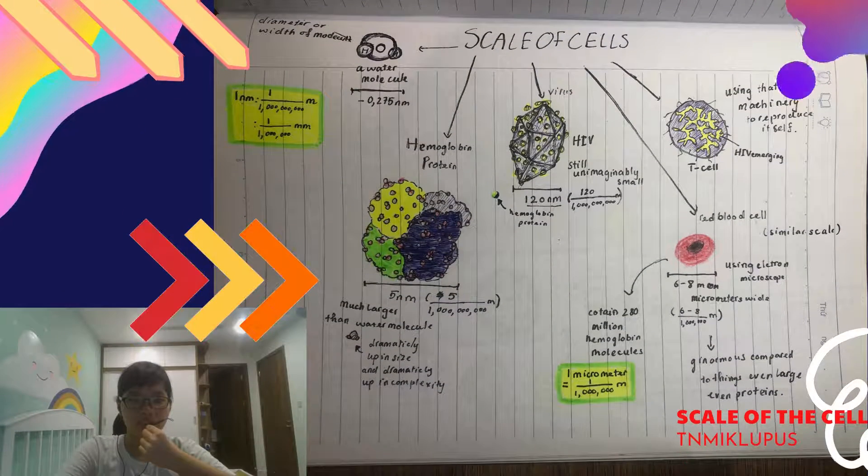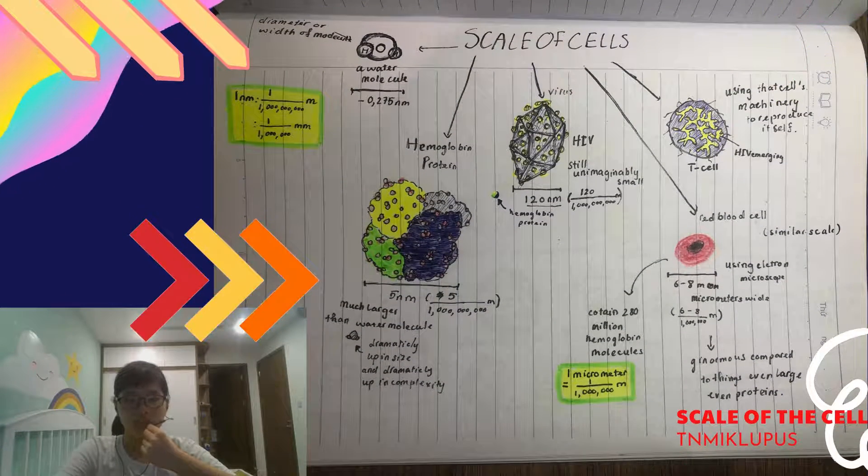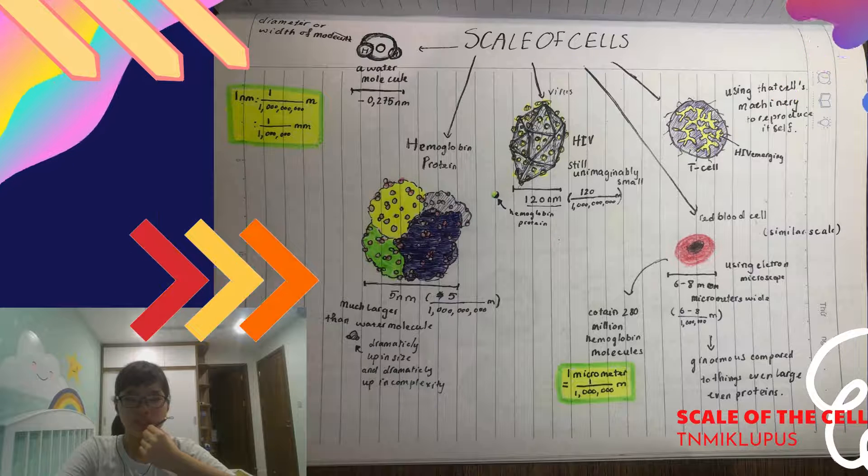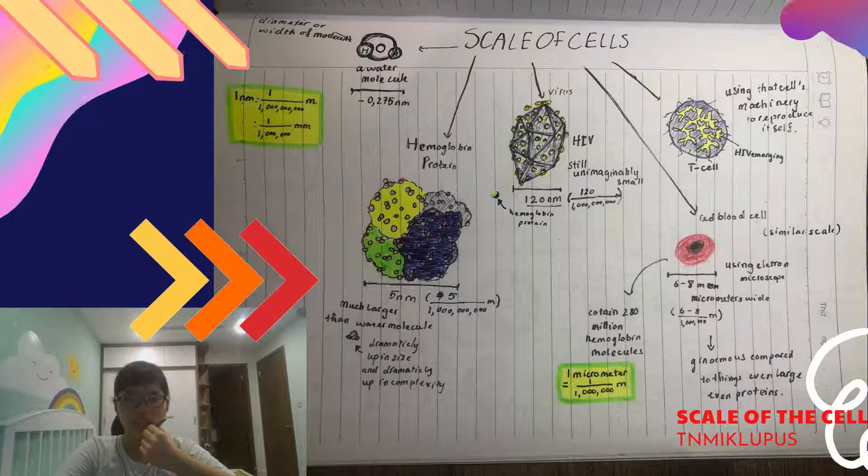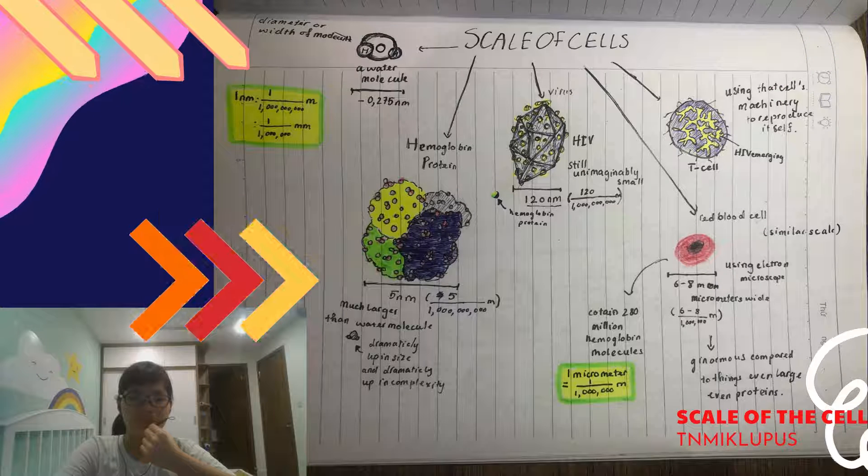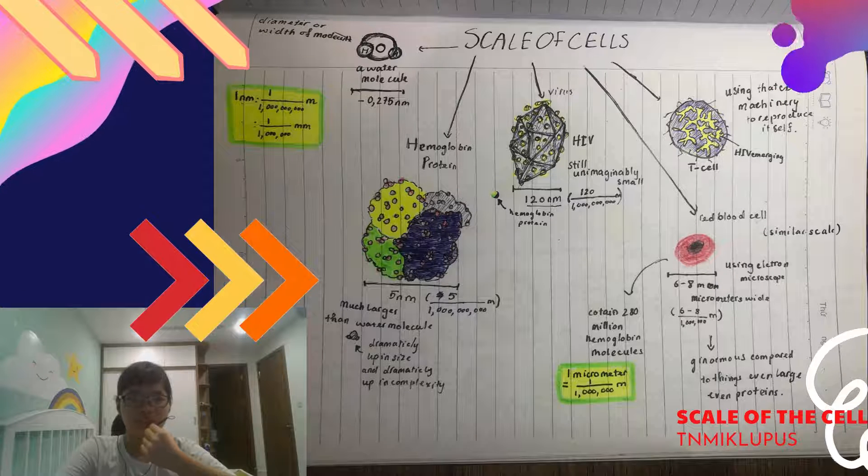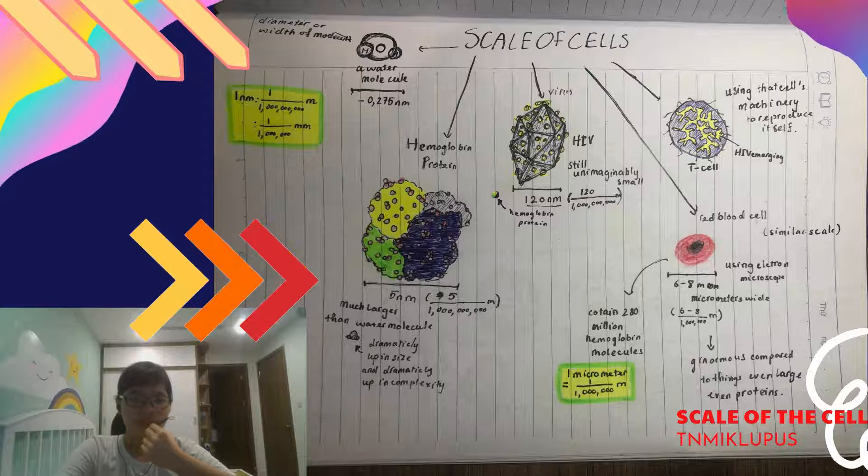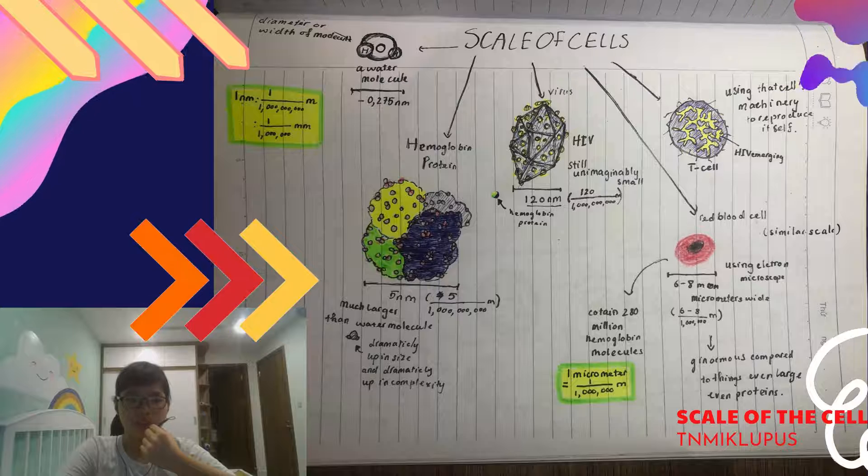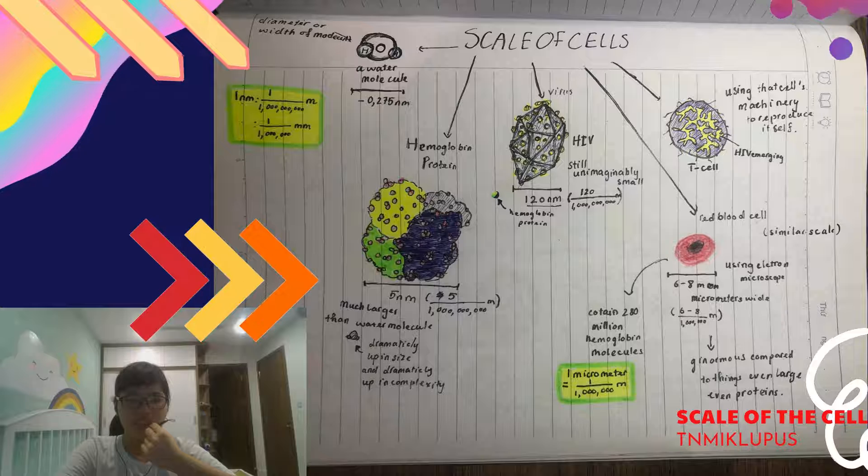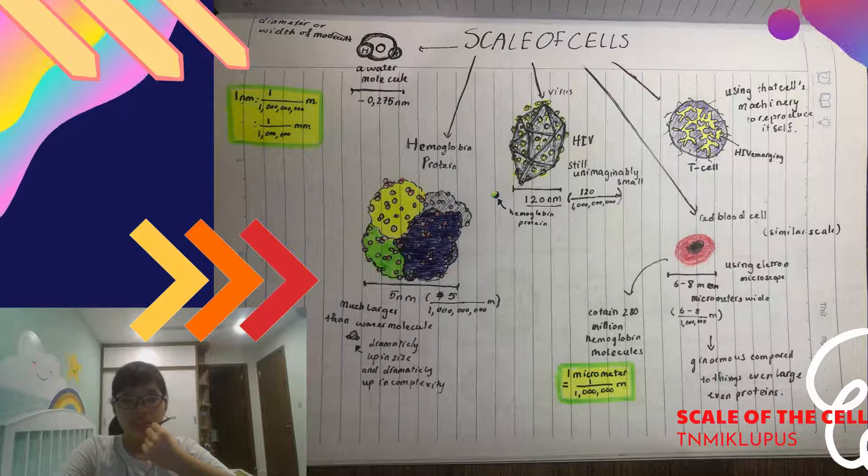When we are studying science, it is natural to categorize things that are very small that we cannot see by our eyes. So today I would like to talk about the scale of the cell. Things may seem very small, but the difference between them is actually really big.